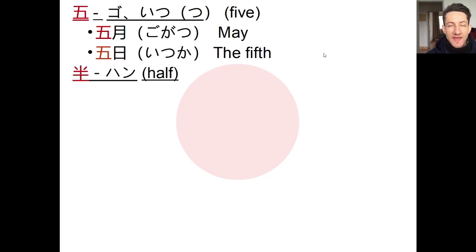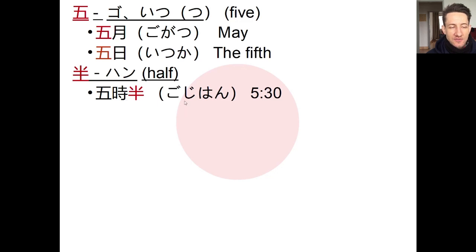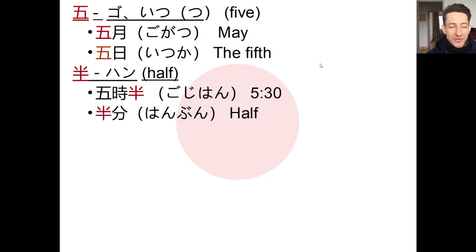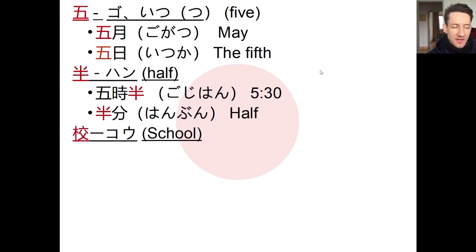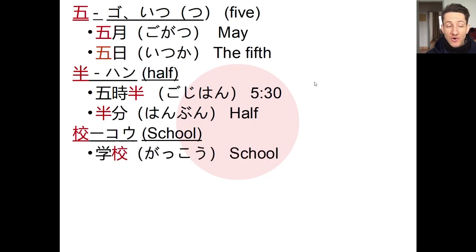Next we have the character for half 「半」, just like we saw in the sentence — gojihan, 5:30. You can also say rokujihan for 6:30, shichijihan for 7:30. Or we can use hanbun to talk about a portion — for example, pizza no hanbun tabeta means I ate half of the pizza.